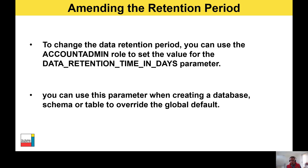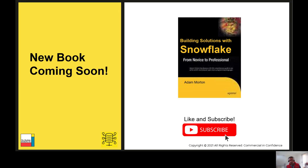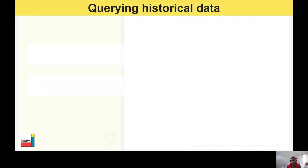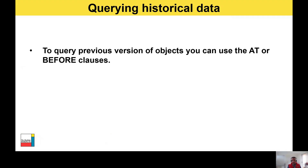If you have a small amount of business-critical data and you're running the Enterprise Edition of Snowflake or above, you could decide to set the retention period to 90 days for a particular object while leaving all other objects at the default of one day. I also want to mention I have a new book on the way about Snowflake coming out in the next few months — don't forget to like and subscribe, and drop a comment letting me know if there are any topics you'd like me to cover.